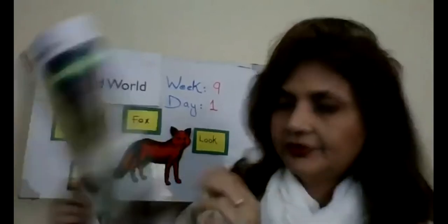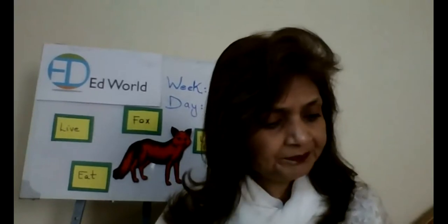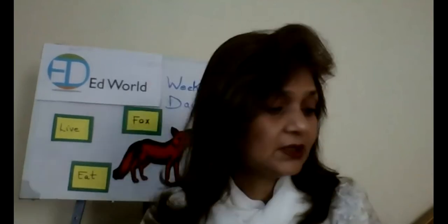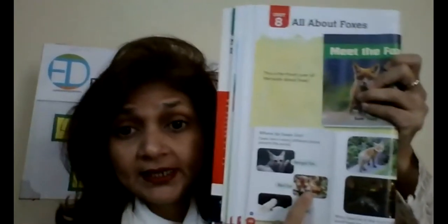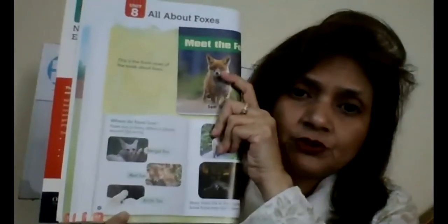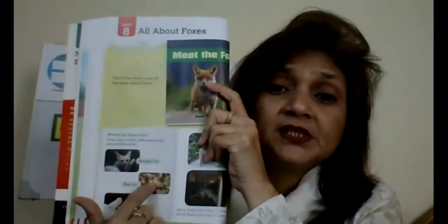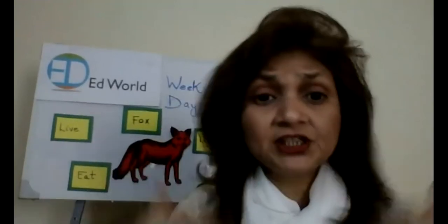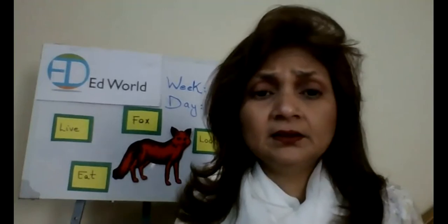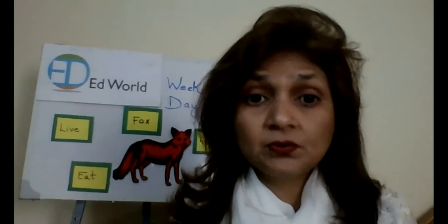If you open page number 48, all about foxes, you will find different information. This page is titled 'Where do foxes live?' I'm going to read it for you and you will follow along in your book. Foxes live in many different places around the world. There is a Bengal fox who lives in Bengal, a red fox, and the arctic fox. Some foxes live in the countryside, and some foxes now also live in towns and cities.